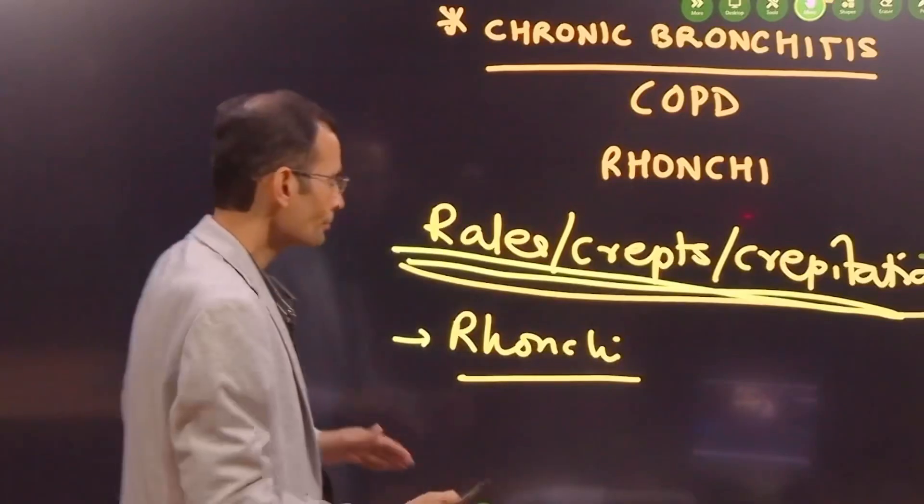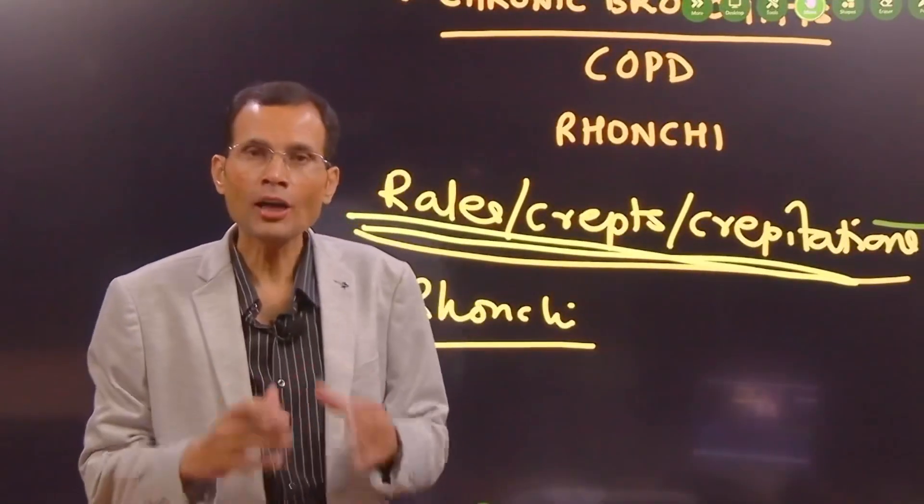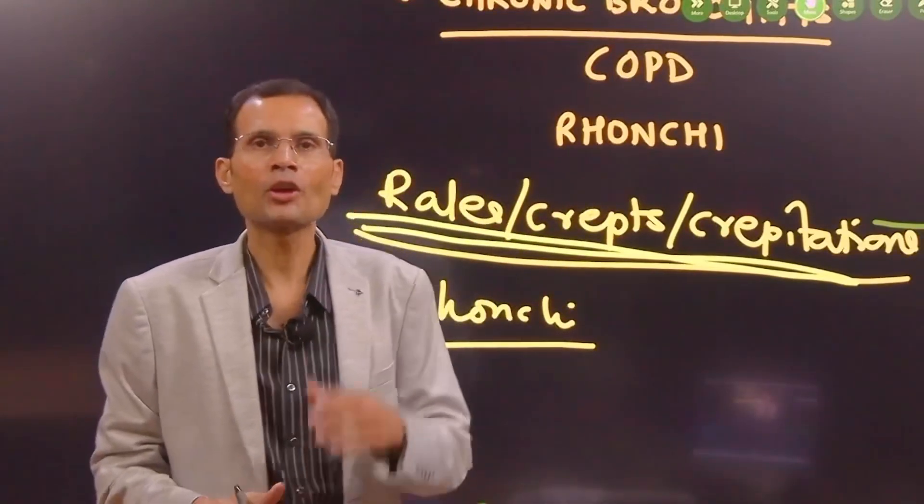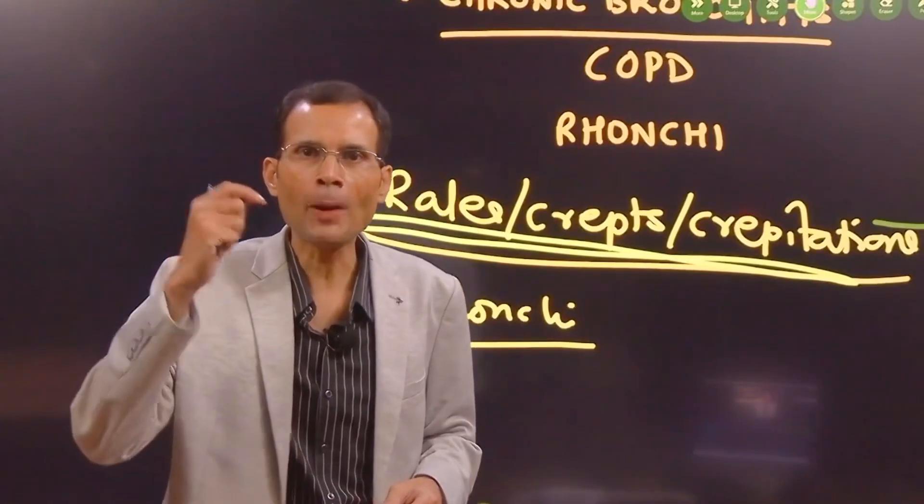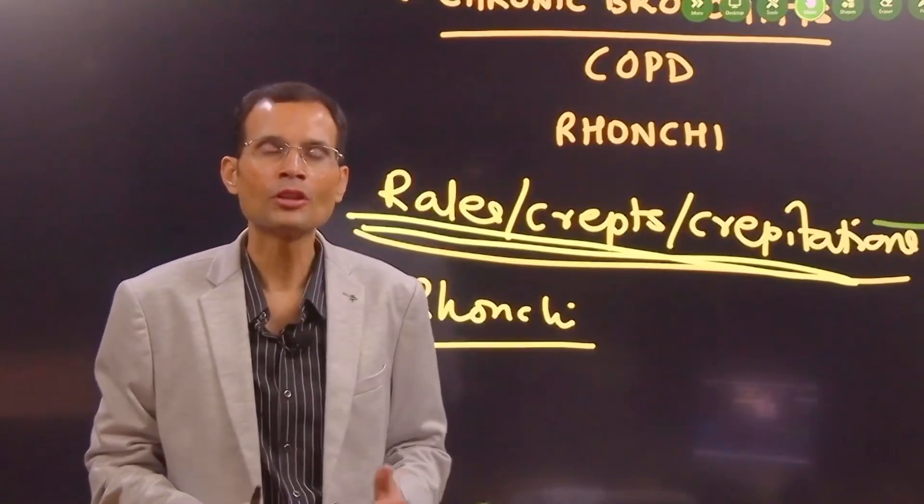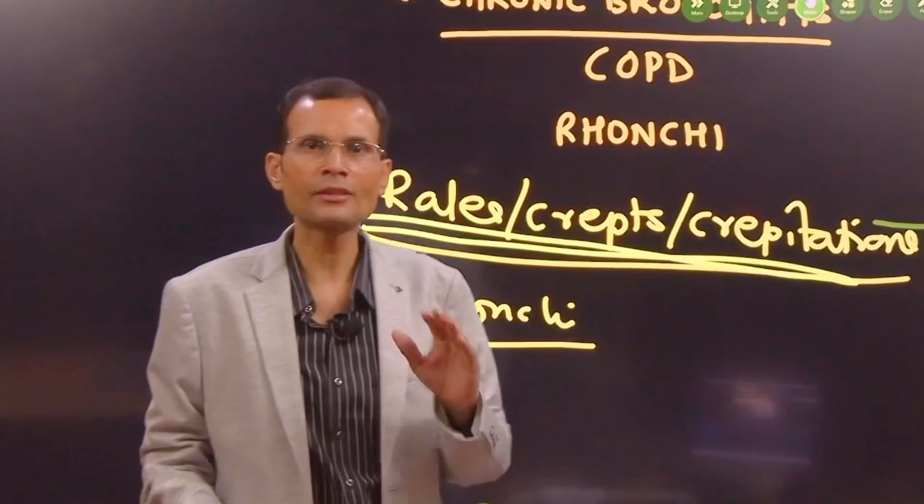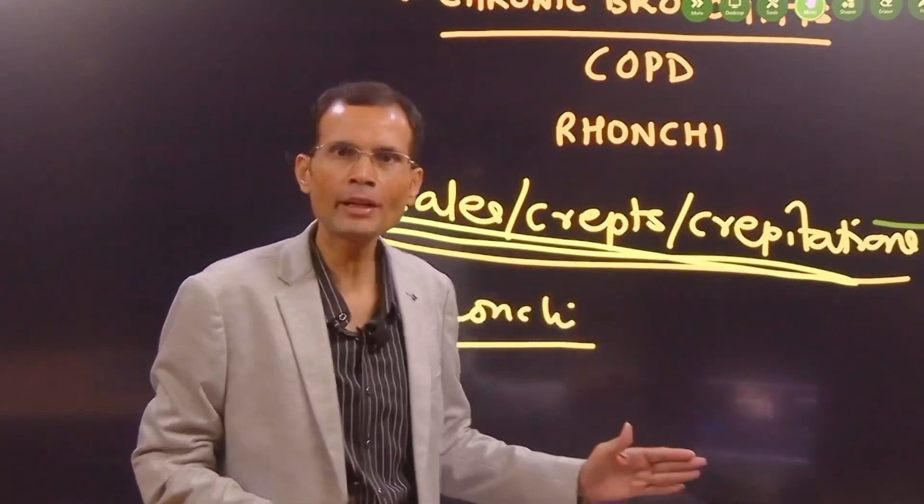And the other one is ronchi. Ronchi are heard commonly in the COPDs. Why? Because the airways are narrowed in COPD, so when the air passes through the narrowed airways there is that whistling type of sound, and that is called as a ronchi, also referred to as the wheezes. Ronchi are heard in COPDs.